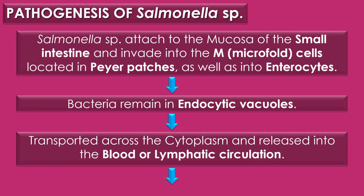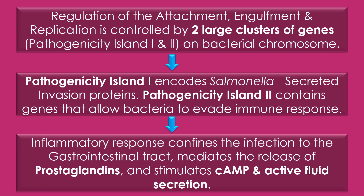In the pathogenesis of Salmonella species, after ingestion and passage through the stomach, Salmonella attaches to the mucosa of the small intestine and invades M cells (microfold cells) located in the Peyer's patches, as well as enterocytes. The bacteria remain in endocytic vacuoles where they replicate and can also be transported across the cytoplasm and released into blood or lymphatic circulation. Regulation of attachment, engulfment, and replication is controlled by two large gene clusters present on the bacterial chromosome.